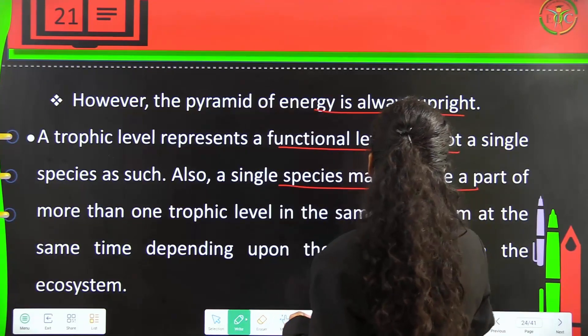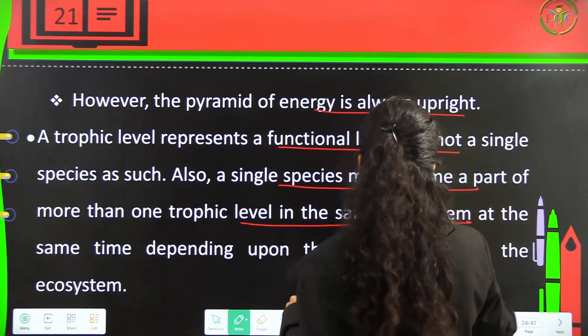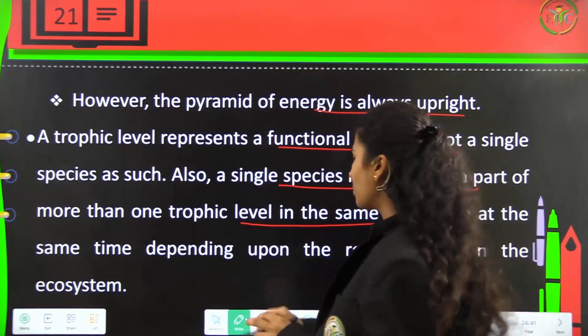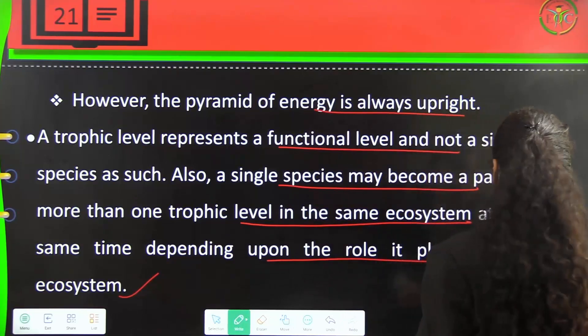A trophic level represents a functional level and not a single species. A single species may become part of more than one trophic level in the same ecosystem, depending upon the role it plays.